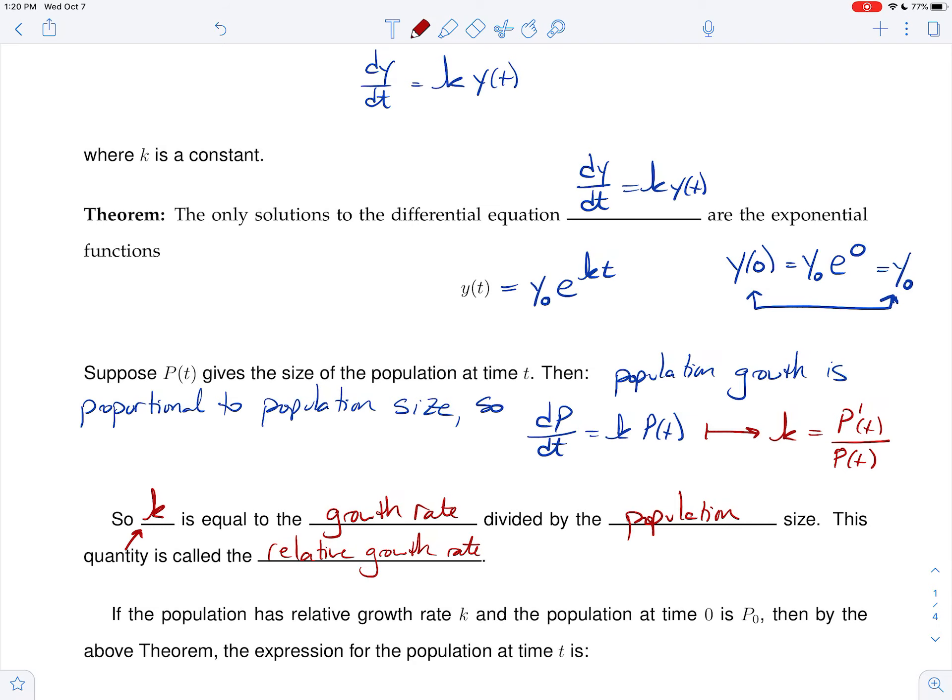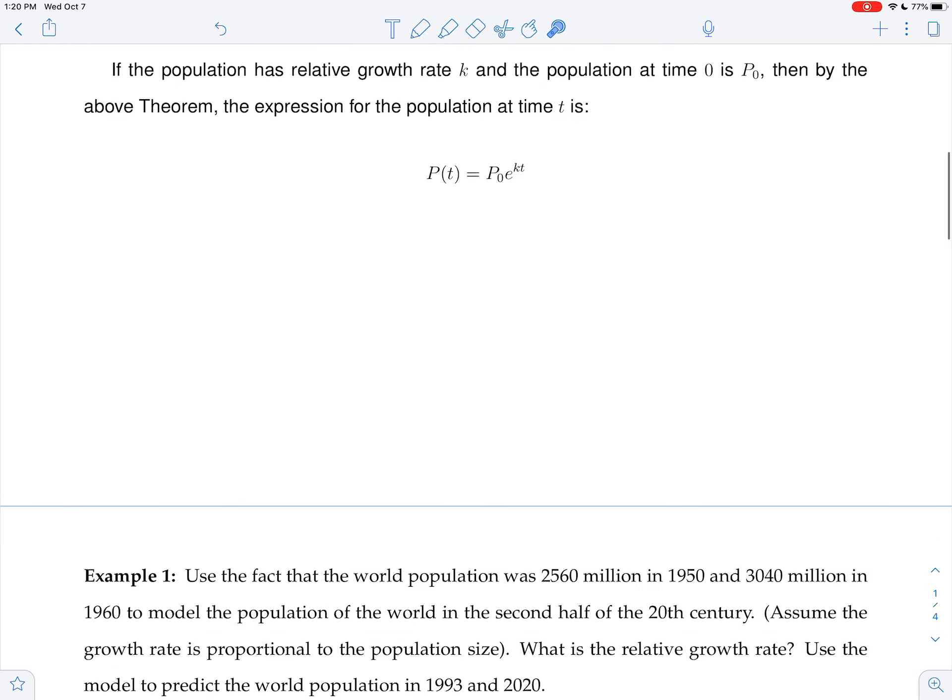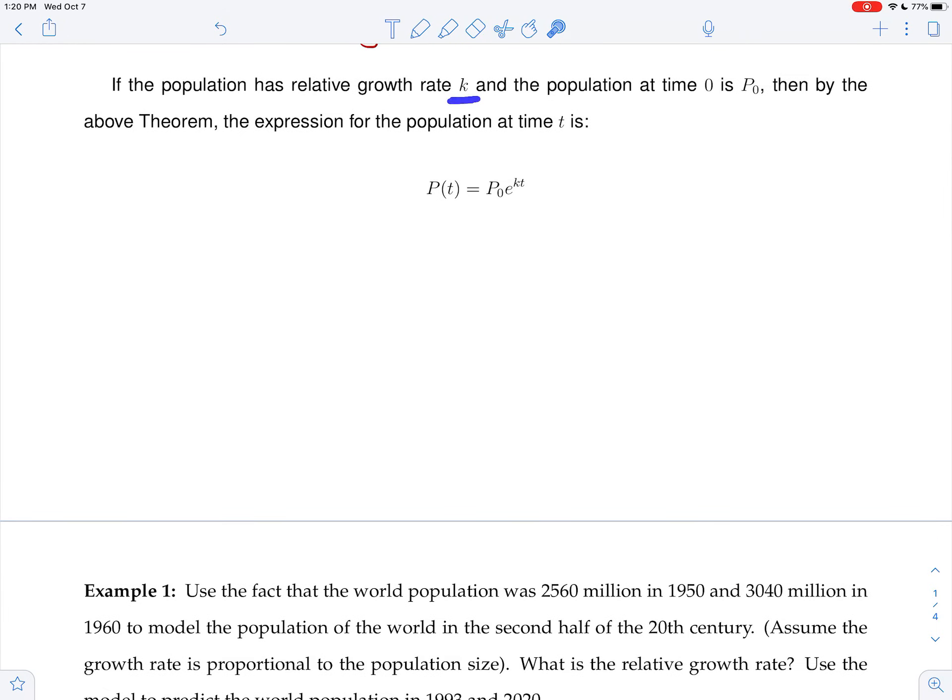Okay, so finally, if a population has a relative growth rate k, and the population at time zero is p naught, then by the theorem above, the expression for the population at time t is p(t) equals p naught e to the kt. We're going to use this again and again and again.